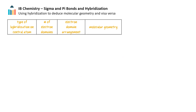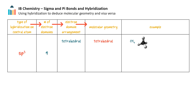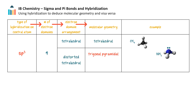So far, we have seen that the type of hybridization in a central atom affects its number of electron domains, which in turn affects the molecular geometry. Sp3 hybridized atoms with four equivalent electron domains form a tetrahedral molecular geometry. But if one electron domain is a lone pair, the shape is trigonal-pyramidal. And if there are two lone pairs, this makes the shape bent.